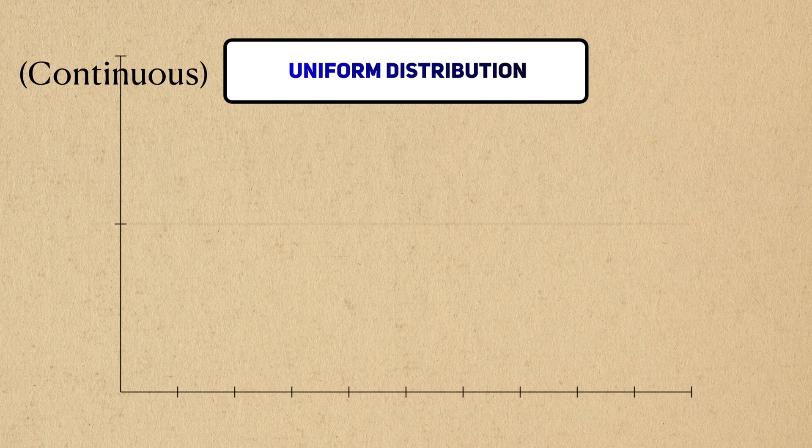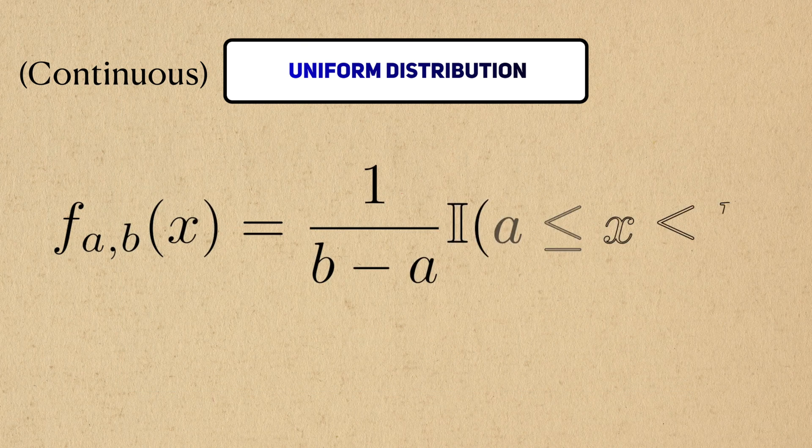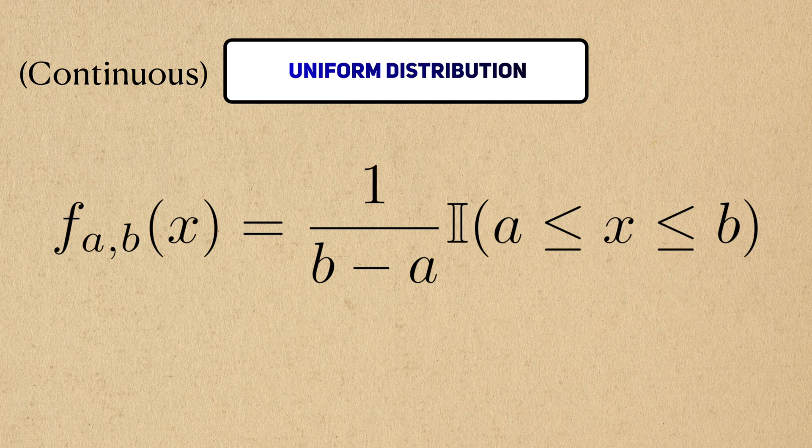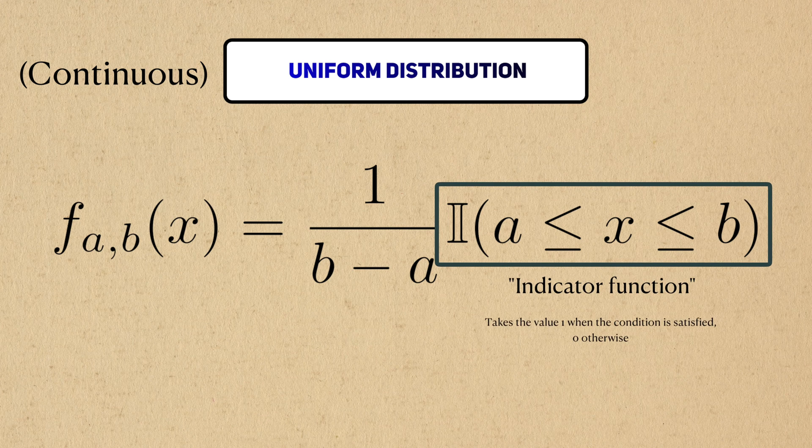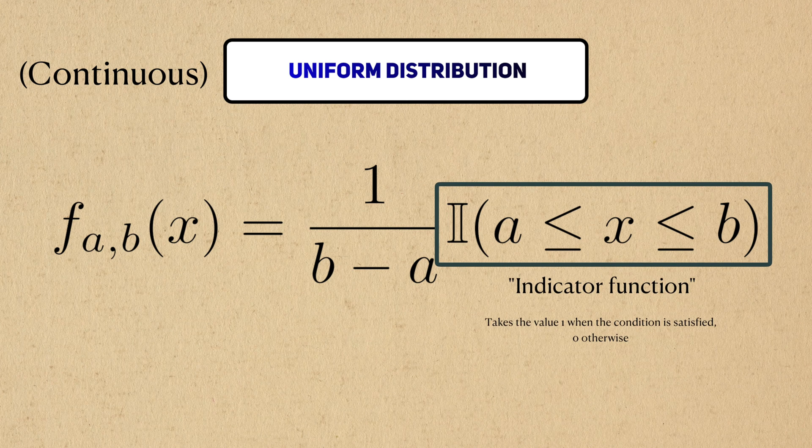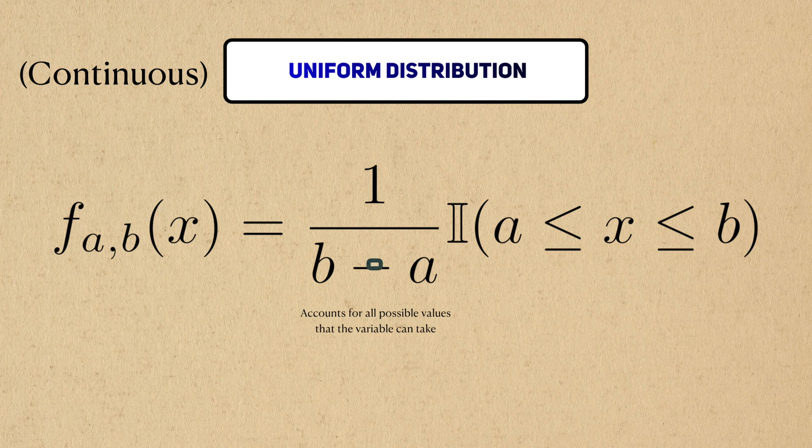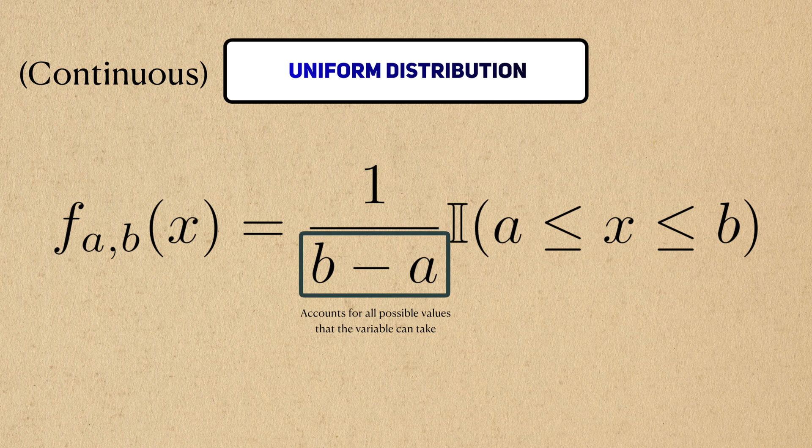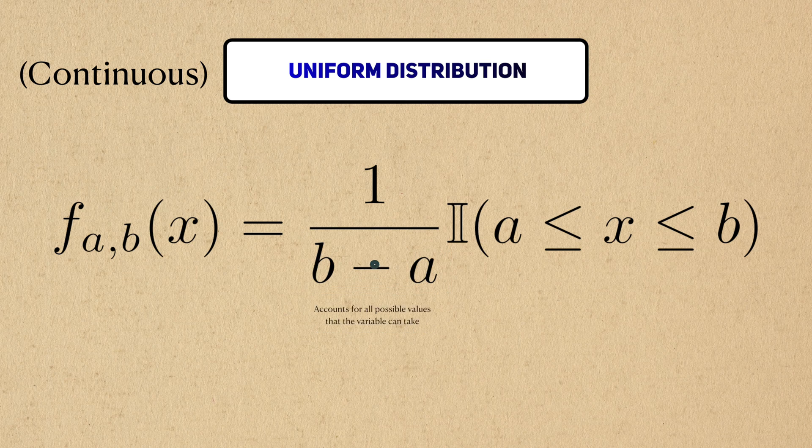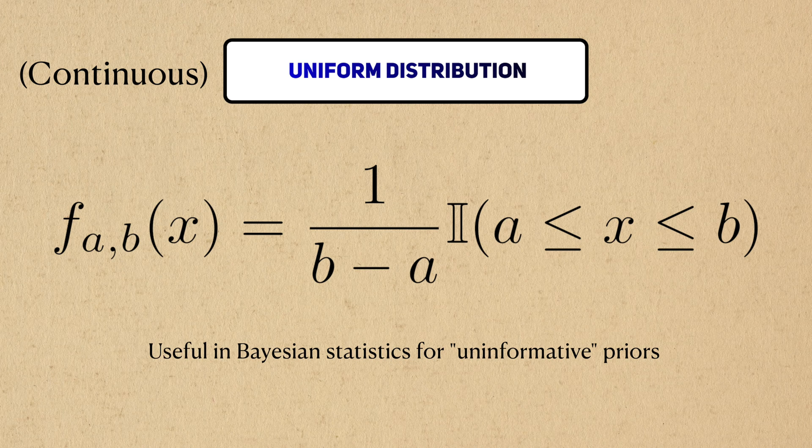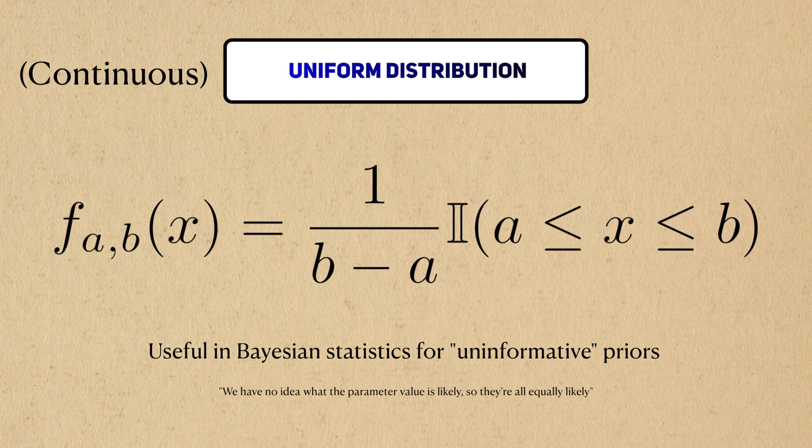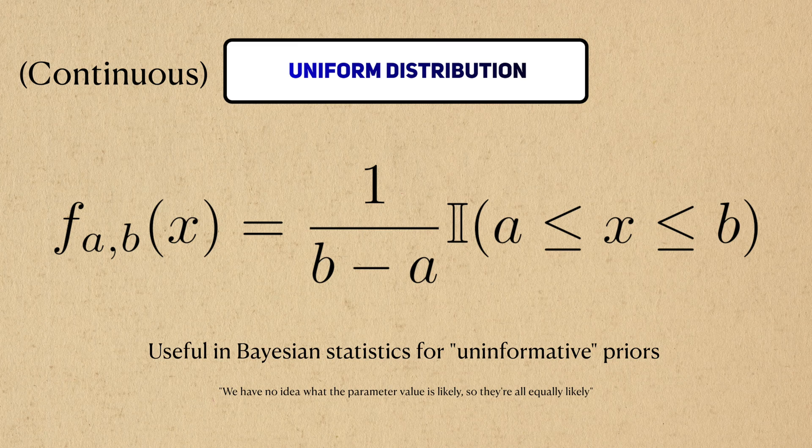Uniform random variables can also be continuous. Given these two parameters, the probability distribution of a uniform random variable is given by this function. This fancy function here is an indicator function. It takes the value 1 when the condition inside is true and 0 otherwise. This value here ensures that all the values between a and b are given the same probability. Continuous uniform distributions are useful in Bayesian statistics, where it can convey an uninformative prior, meaning that we have no idea what the parameter value might be, so everything should be equally likely.